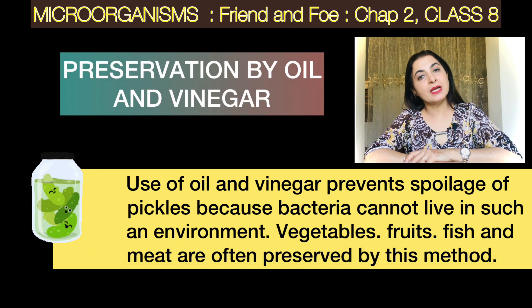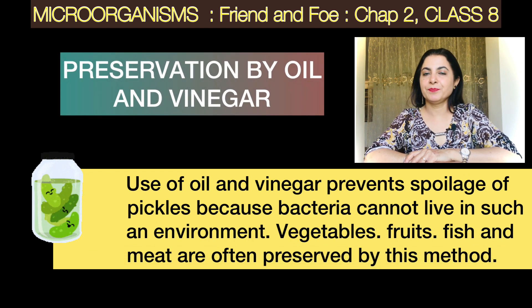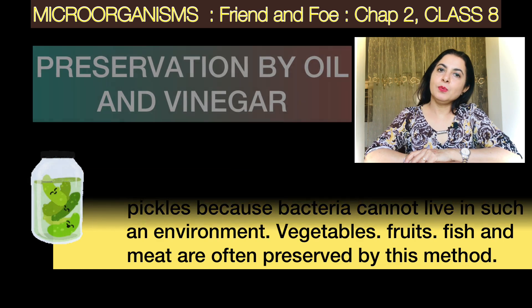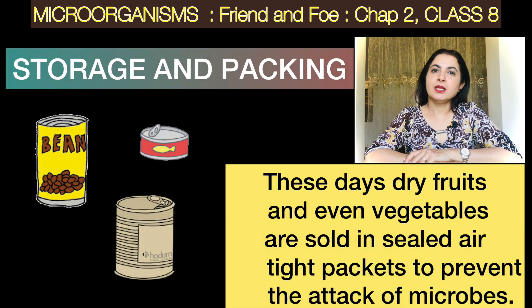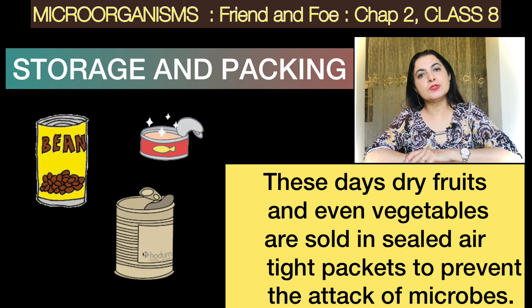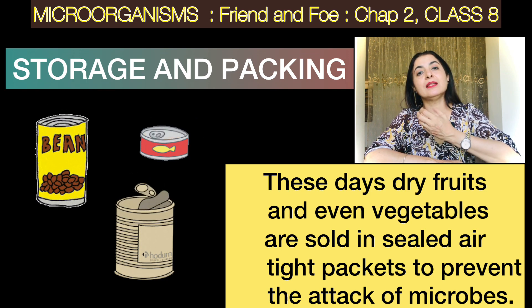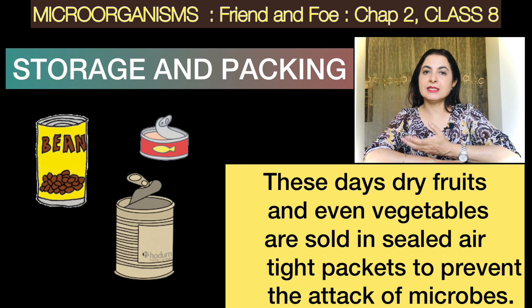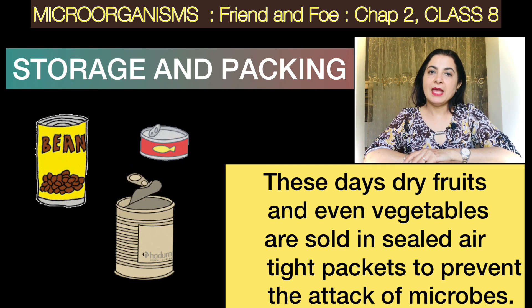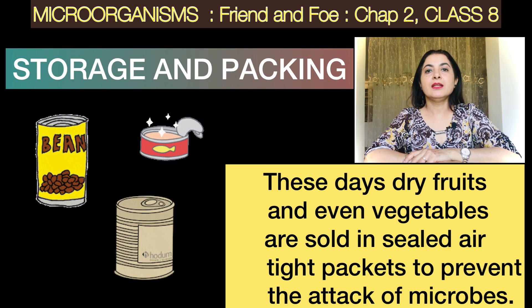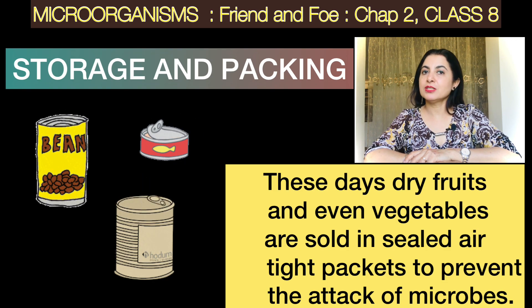Another important method to preserve food is by adding oil or vinegar, under which conditions bacteria again cannot survive. Lastly, some foodstuffs like dry fruits come in cans. These cans are airtight — there is no air in them, and a vacuum has been created. Without air, microorganisms naturally cannot survive.